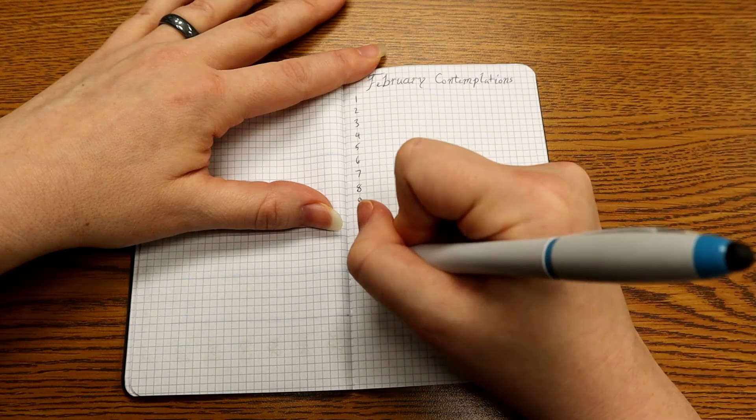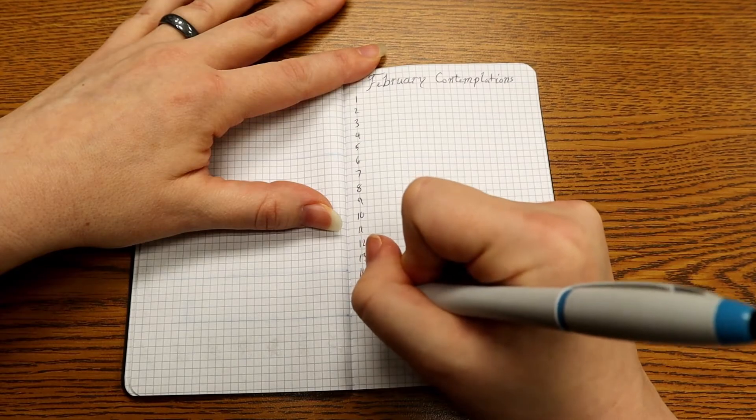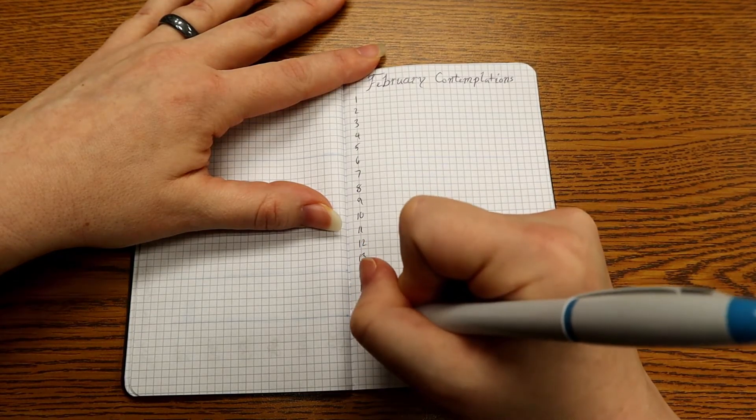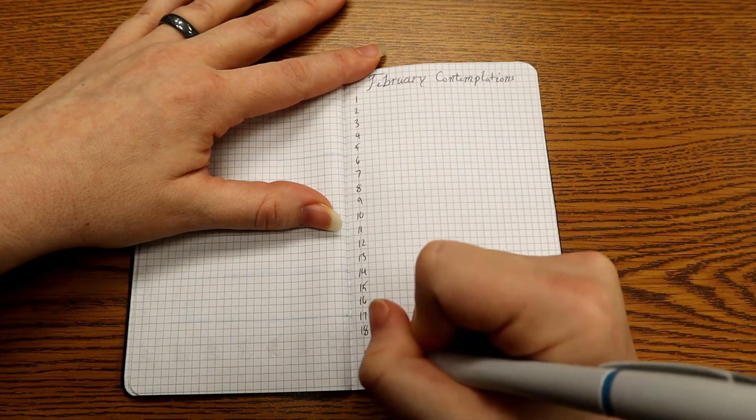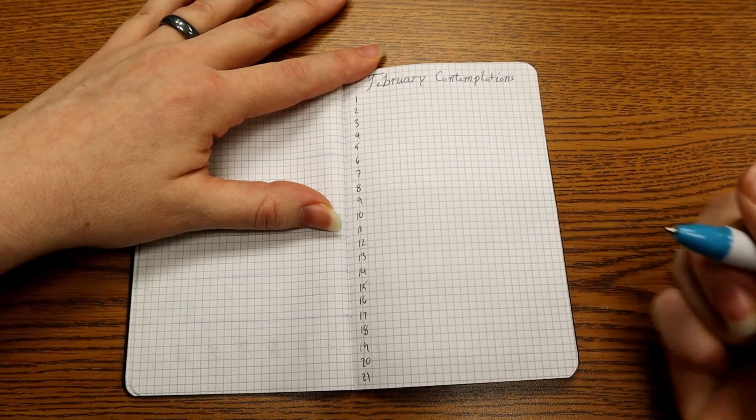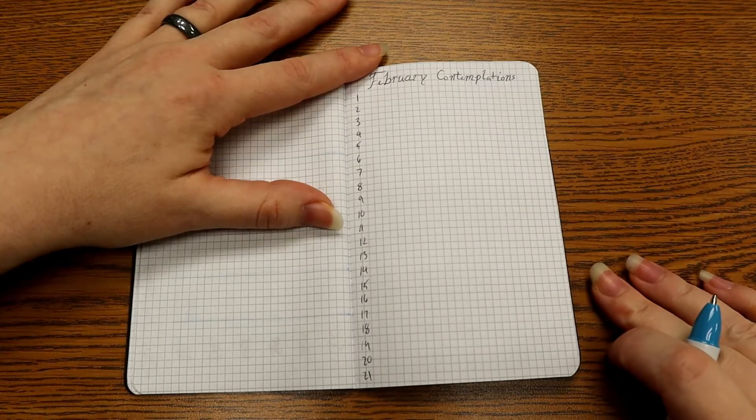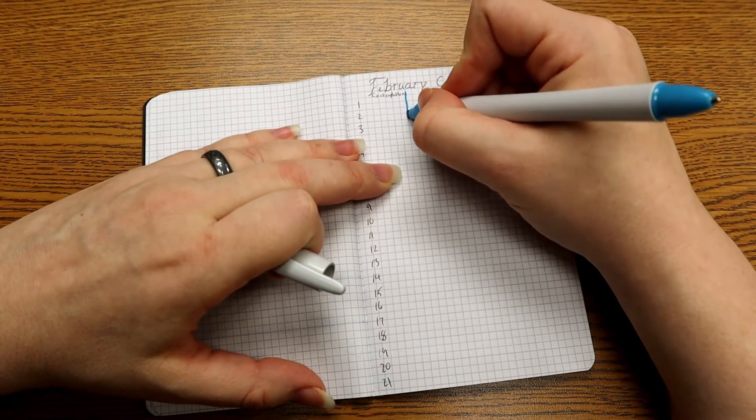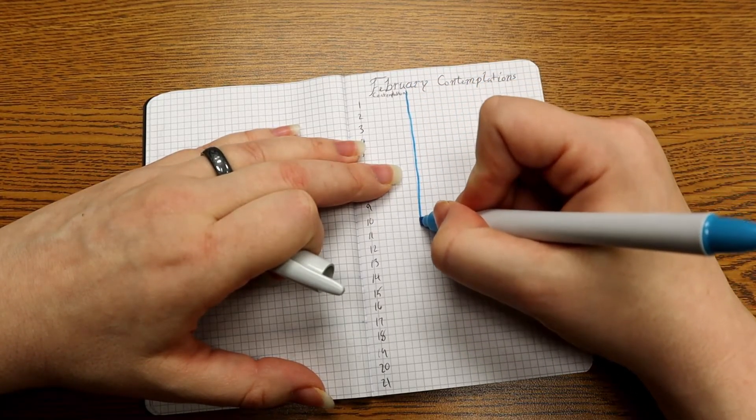Next, we're going to move on to my contemplation tracker. This is going to be a little bit smaller. And it's going to look a lot like a monthly log just because I'm tracking something every day. And I'm going to do a column for contemplation. This is just a yes, no.